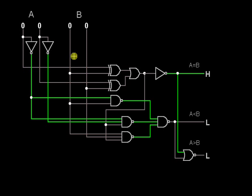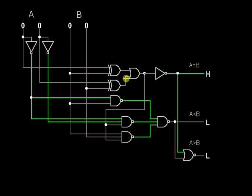Here, A1 is low and B1 is low. When both inputs to the XOR gate are low, the output is low. Similarly, A2 and B2 are also low, so the XOR output is also low. When both inputs of the OR gate are low, the output is low. This low signal is fed to the NOT gate, so we get a high signal — that is, A equals B is high.